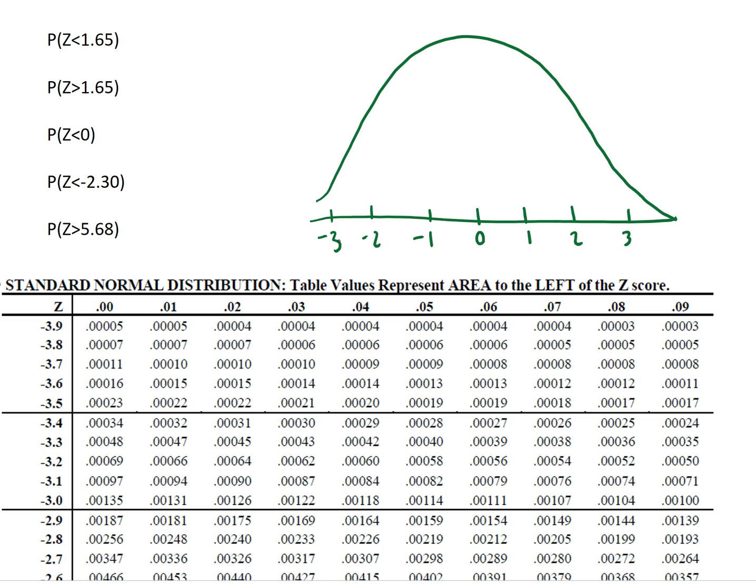And the standard normal table represents the areas to the left of the z-score. So it'll always find the cumulative area. The table represents our cumulative distribution function or the CDF, the probability of x being less than or equal to a particular value of x.